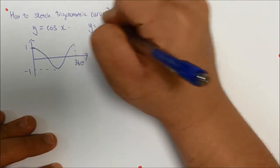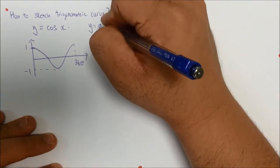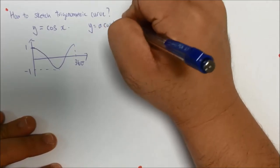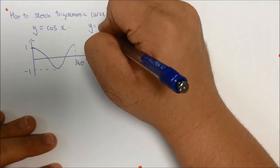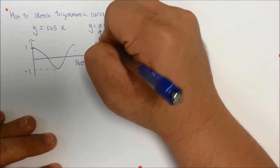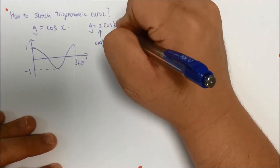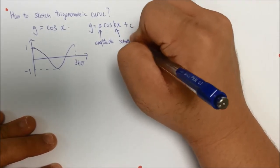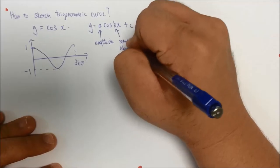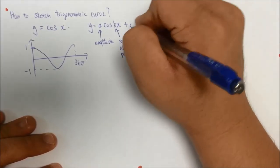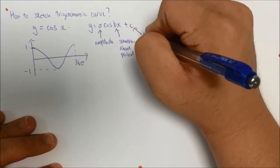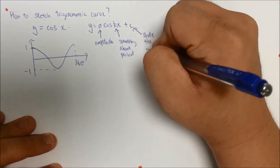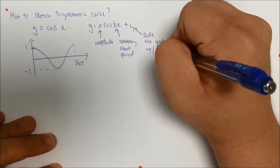Bear in mind that we have our general equation whereby it's a cosine bx plus c. So this a actually tells us the amplitude, this b tells us something about the period, and this c shifts the graph up or down.